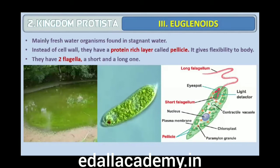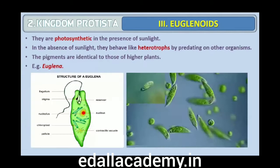Third are euglenoids. The majority of them are freshwater organisms found in stagnant water. Instead of a cell wall, they have a protein-rich layer called pellicle which makes their body flexible. They have two flagella — a short and a long one. Though they are photosynthetic in the presence of sunlight, when deprived of sunlight they behave like heterotrophs by predating on other smaller organisms. Interestingly, the pigments of euglenoids are identical to those present in higher plants. Example: Euglena.